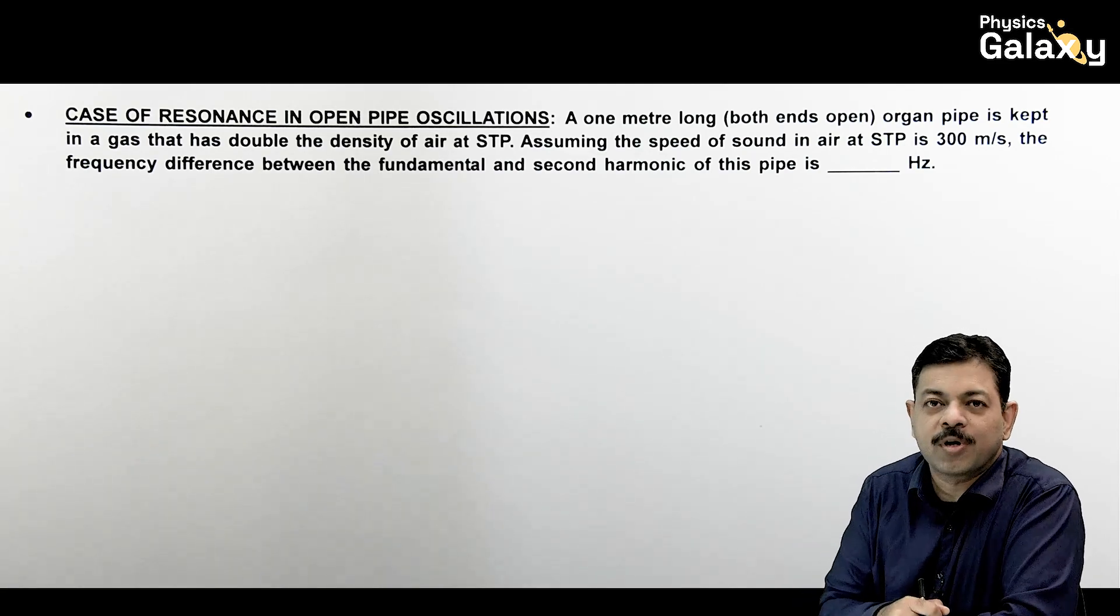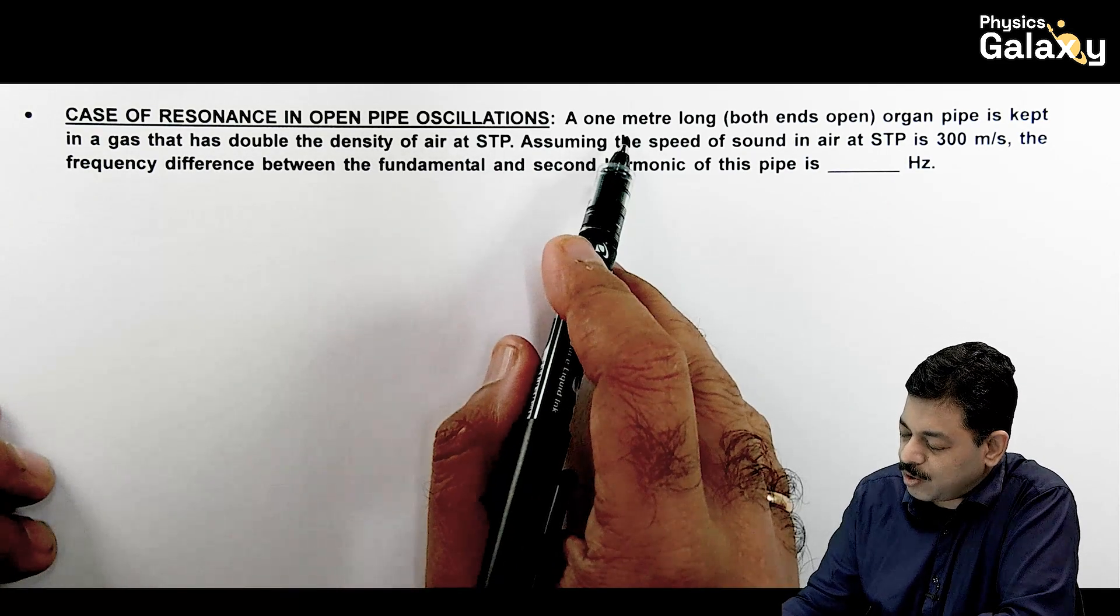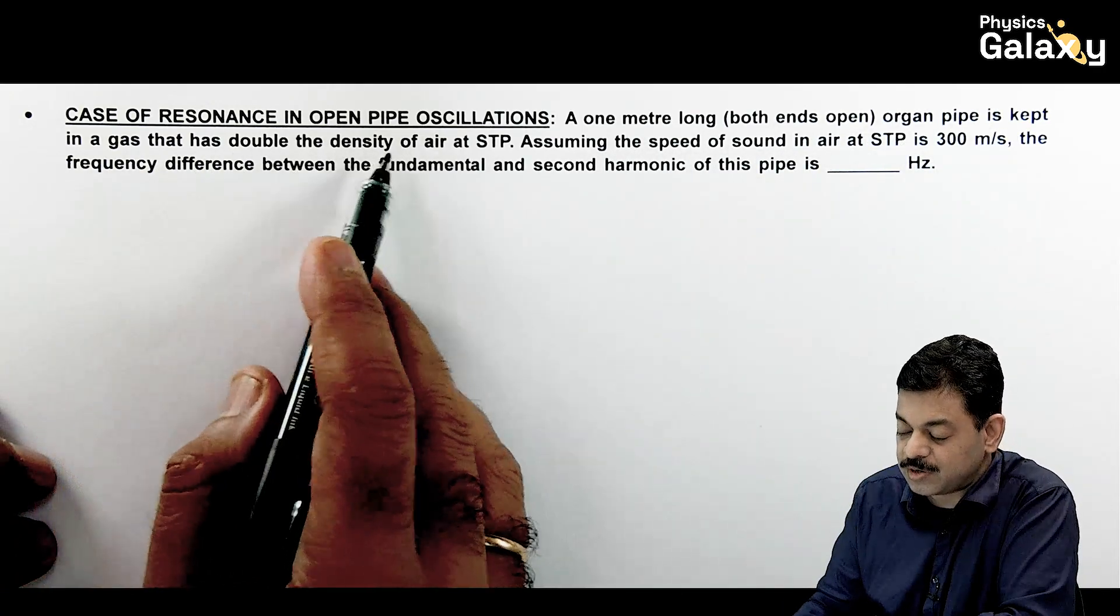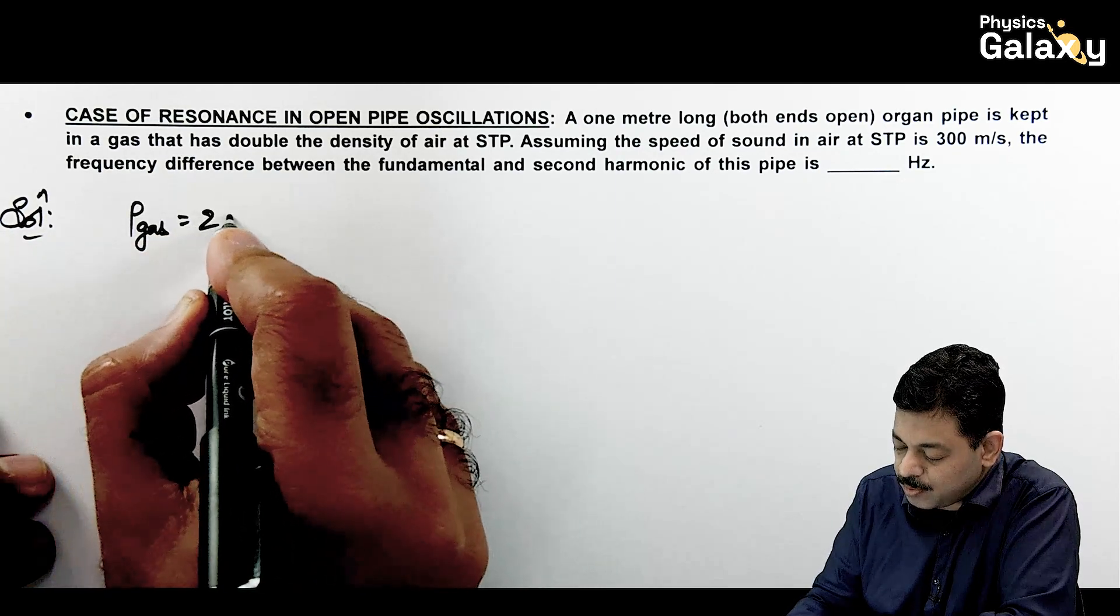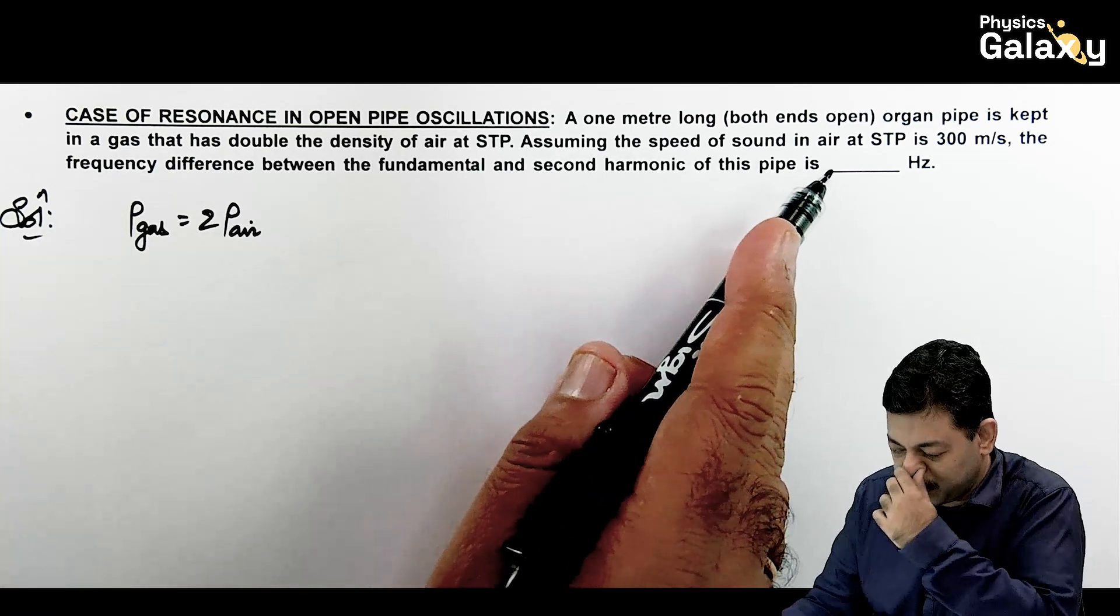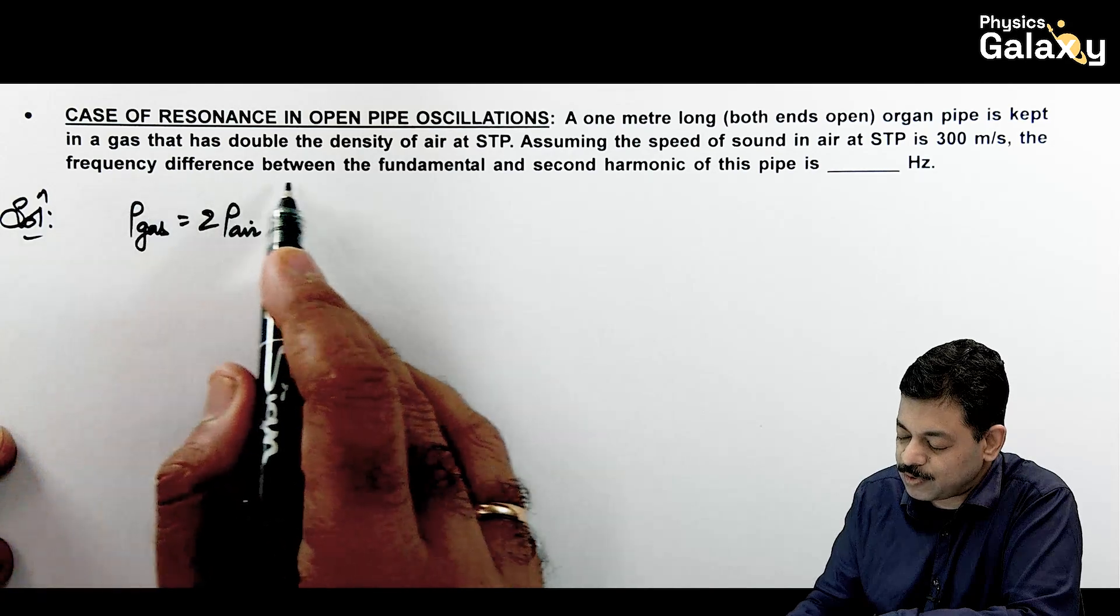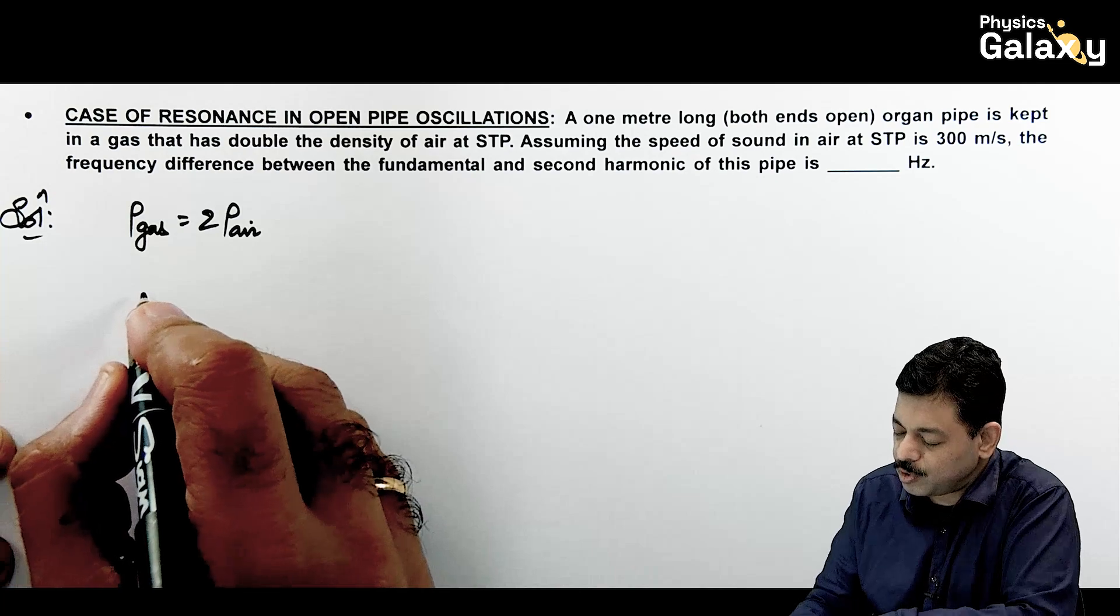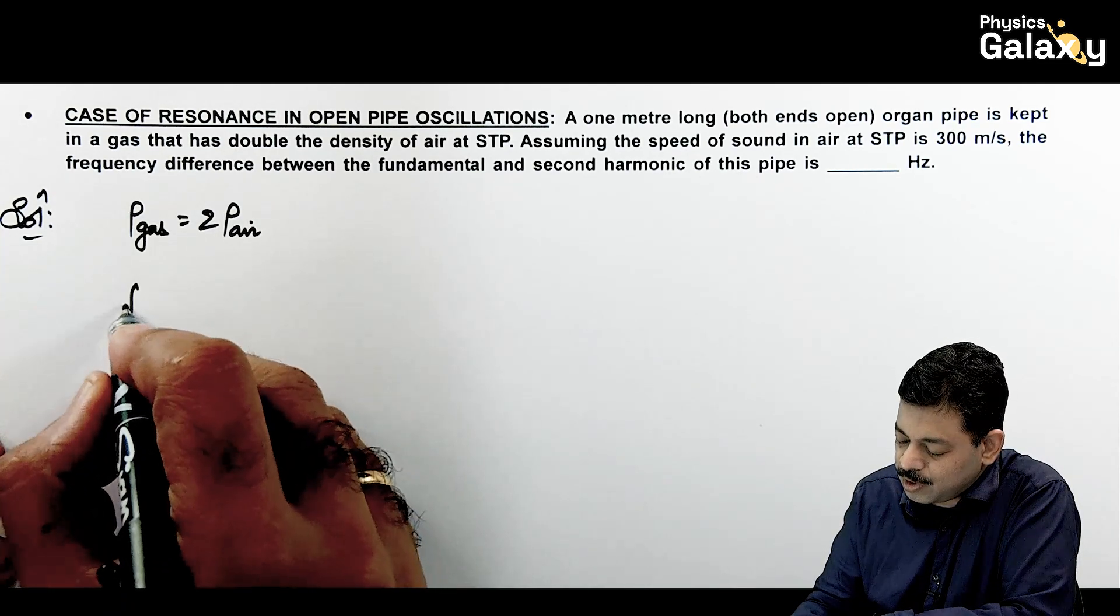Thank you Pooji. Let's talk about a case of resonance in open pipes. Here it is saying 1 meter long both ends open pipe is kept in a gas that has double the density of air. Toh sabse pehle humein data diya gaya hai. That is gas density is equal to double the density of air. Now it is saying assuming the speed of sound in air at STP is 300 meter per second. So we need to check the frequency difference between the fundamental and second harmonic of this pipe in gas.